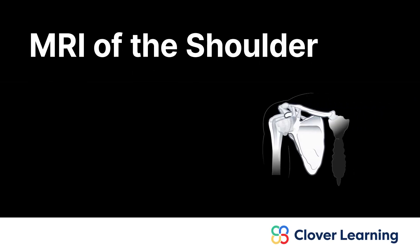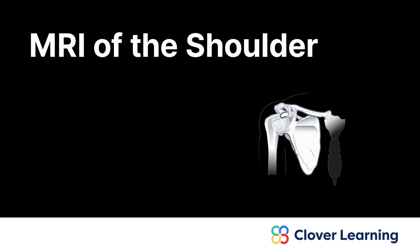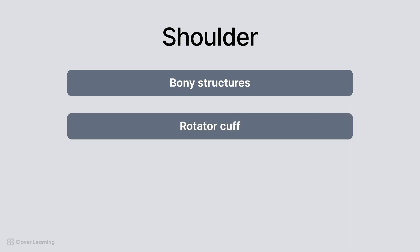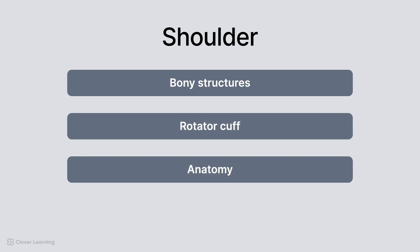Hey everyone! Welcome to today's lesson on the MRI of the shoulder joint. In this lesson, we will look at the bony structures of the joint, the parts of the rotator cuff, and anatomy on different planes of MRI imaging.